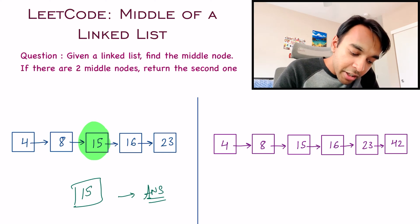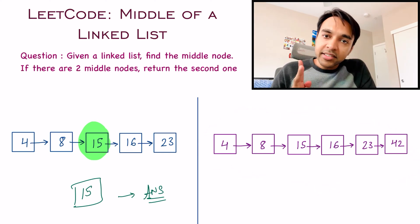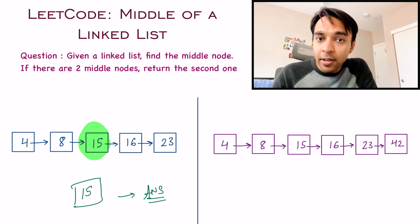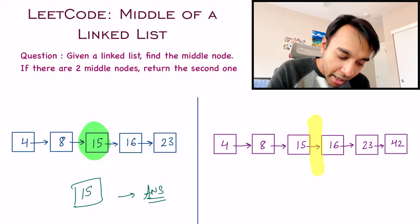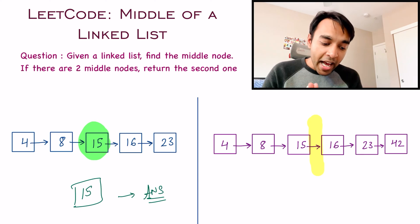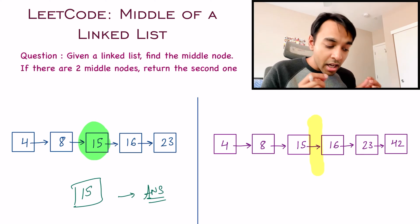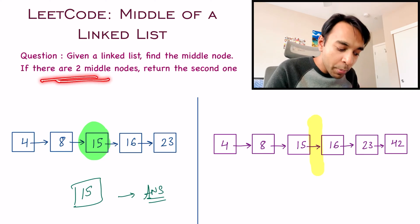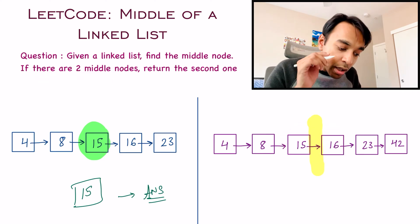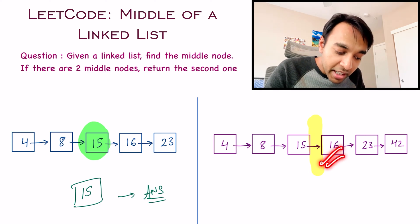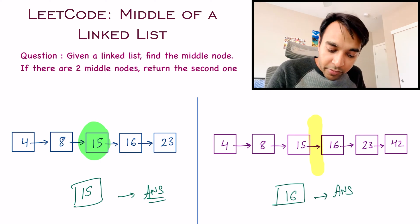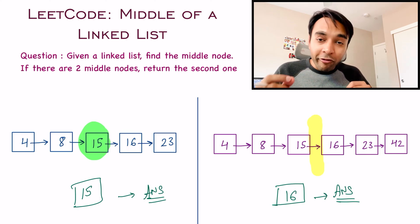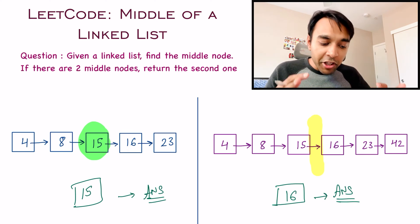But what happens when you look at test case number two? In test case number two, you have a total of six nodes. So if you try to determine the middle point, this middle point will lie somewhere over here. Because on the right you have three nodes and on the left you again have three nodes. So this is the scenario where you have two middle nodes, either 15 or 16. So which one do you have to return? You have to return me the second node. So for test case number two, you need to return 16 as your answer. So now, if you feel comfortable with what actually does the middle of a linked list mean, feel free to try the problem once again on your own. Otherwise, let us dive into the solution.